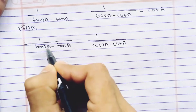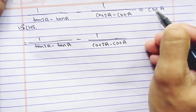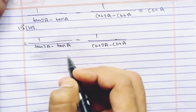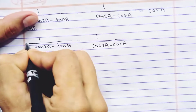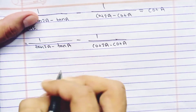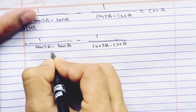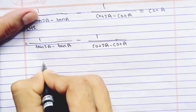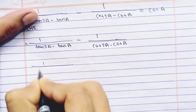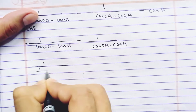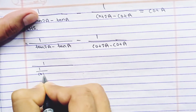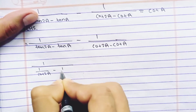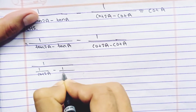We can see two terms — tan and cot — but here is only cot, so let's convert this tan in the form of cot. If you convert tan in terms of cot, then tan a becomes 1 by cot 2a and this tan a becomes 1 by cot a.